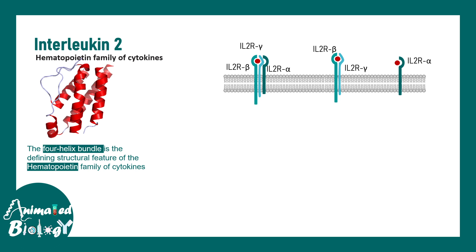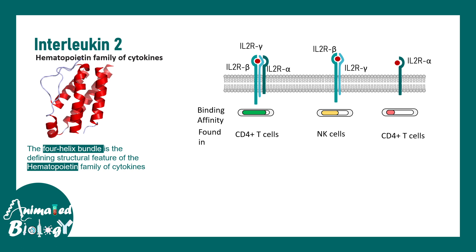In terms of affinity, the highest affinity is when all three chains are together, and the lowest affinity is when interleukin-2 receptor alpha is alone. As for which configurations are found in which cell types: CD4-positive T cells have both the high affinity and lowest affinity configurations, whereas the intermediate affinity configuration is present in NK cells.